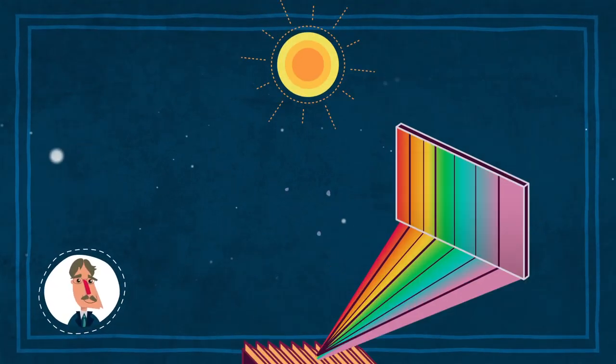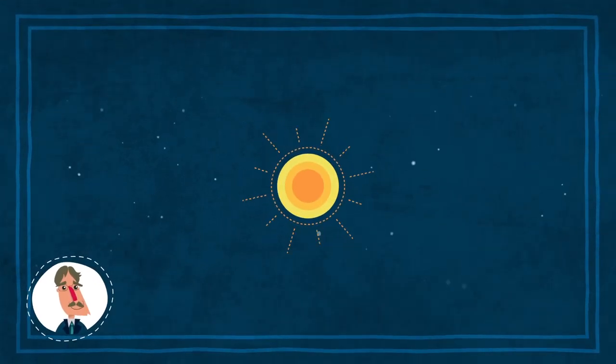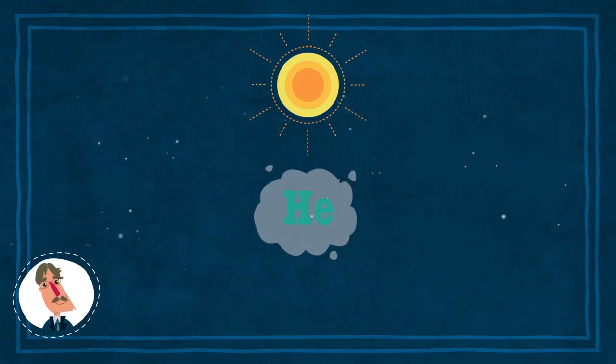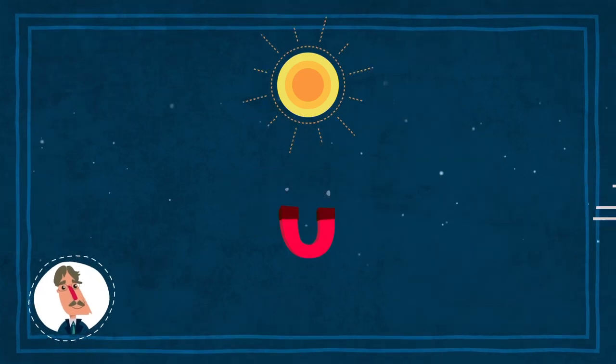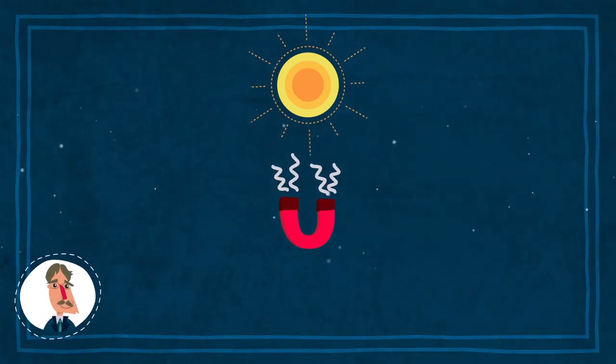By studying the spectral lines emitted by celestial objects, we can discover many things about them. Their chemical composition, their temperatures, their velocities, even their magnetic fields.